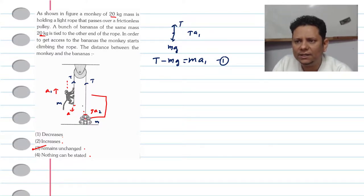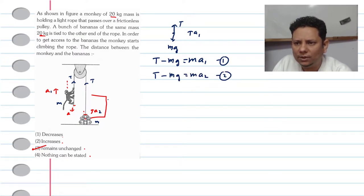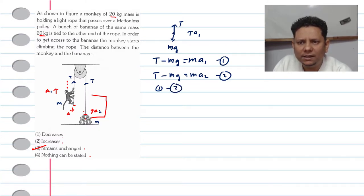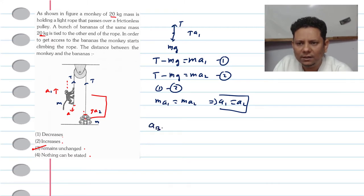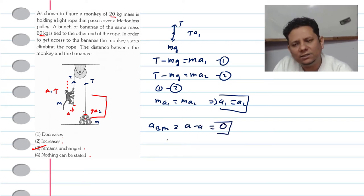Similarly, writing the equation for the bananas: T minus Mg equals M times A2. This is equation number 2. Since the mass M is the same for both, if we subtract equation 2 from equation 1, we get M times A1 equals M times A2, which implies A1 equals A2. So if the monkey is going up with acceleration A, the bananas also go up with acceleration A. The relative acceleration of the bananas with respect to the monkey equals A minus A, which equals 0. Since the relative acceleration is 0, the initial distance between them will remain unchanged. So the answer is: remain unchanged.